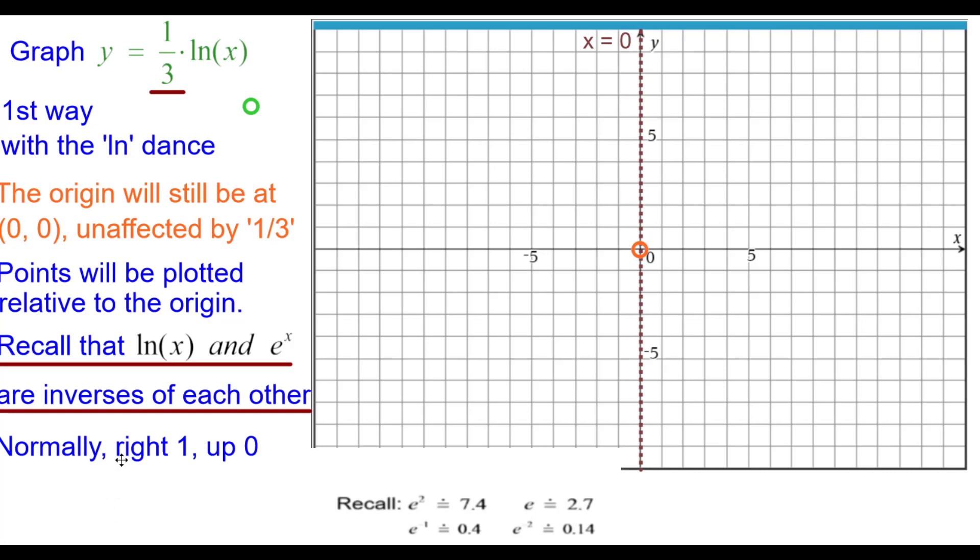Normally, on natural log, it would be right one up zero, and in this case, it will also be right one up zero, that one-third times zero does not affect it. Normally it's right e up one, but in this case it's going to be right e up a third, and e is about 2.7.